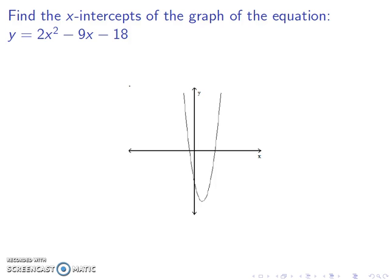We want to find the x-intercepts of this graph, so I'm looking for where this crosses the x-axis, whenever y equals 0. So 0 equals 2x squared minus 9x minus 18. You can use the quadratic formula to solve this; however, we're going to try to factor.